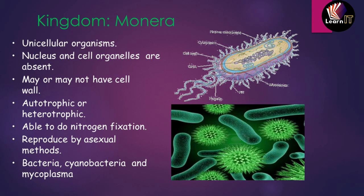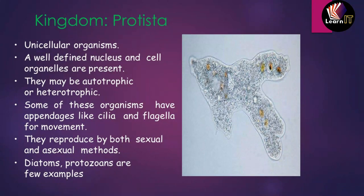The next topic is kingdom Protista. These organisms are also unicellular, made up of a single cell. However, the key difference from Monera is that in Protista, organisms have a well-defined nucleus and cell organelles are also present inside the cell.